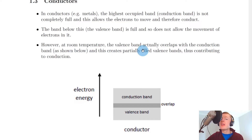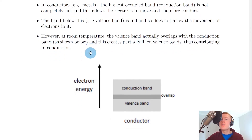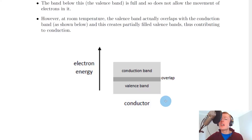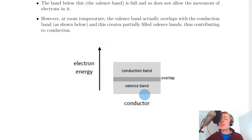However at room temperature the valence band actually overlaps with the conduction band as shown below in this picture and this creates what we call partially filled valence bands thus contributing to conduction. So the energy diagram for a conductor shows electron energy going upward, with the conduction band at higher energy levels than the valence band, and you'll notice that the two bands are overlapping.